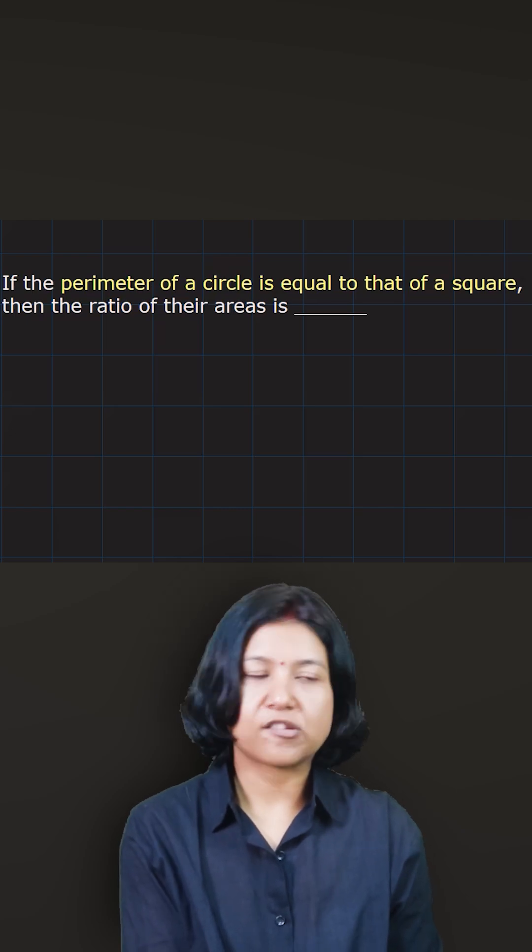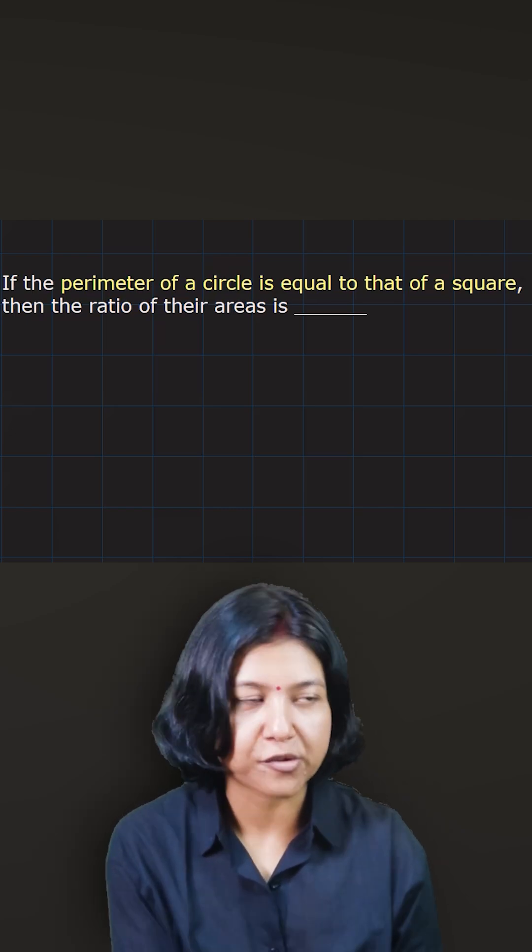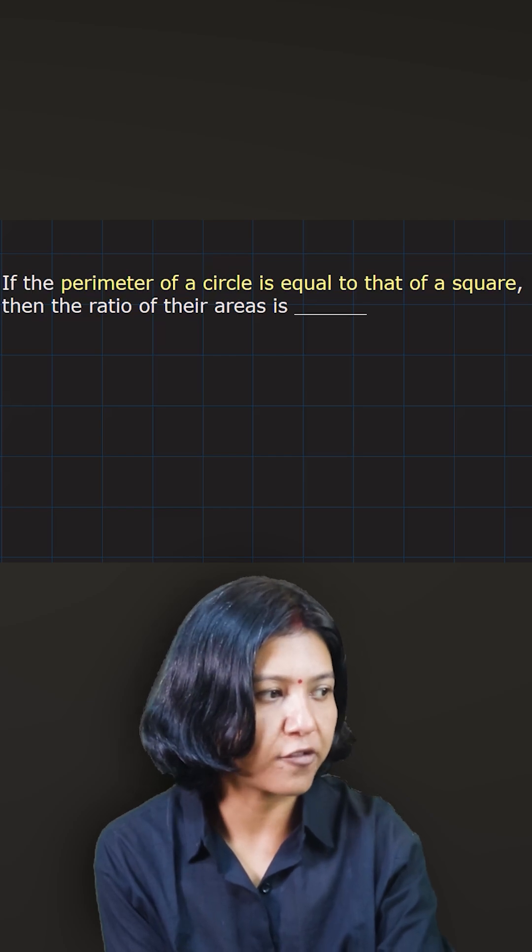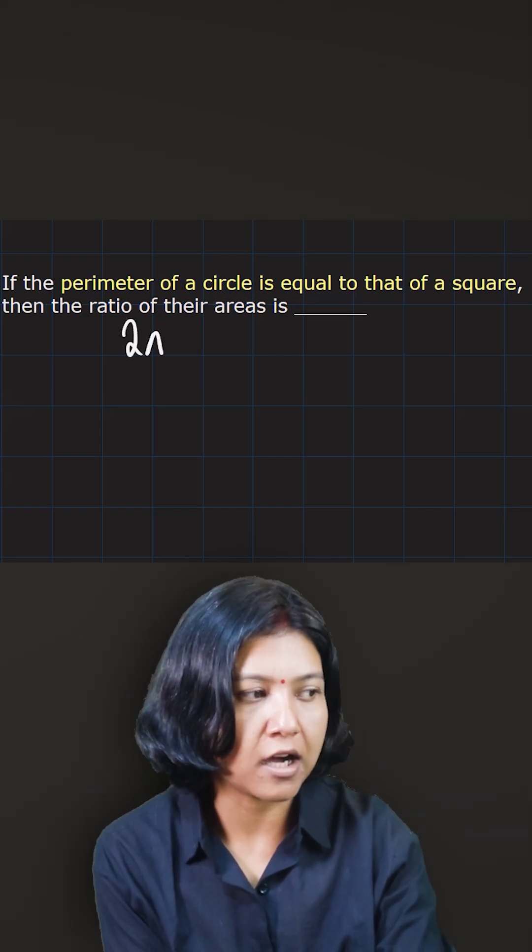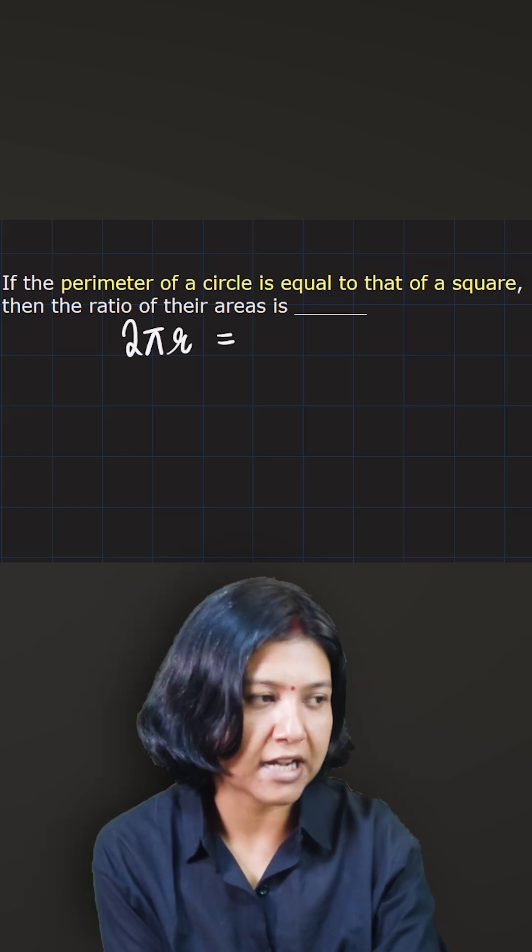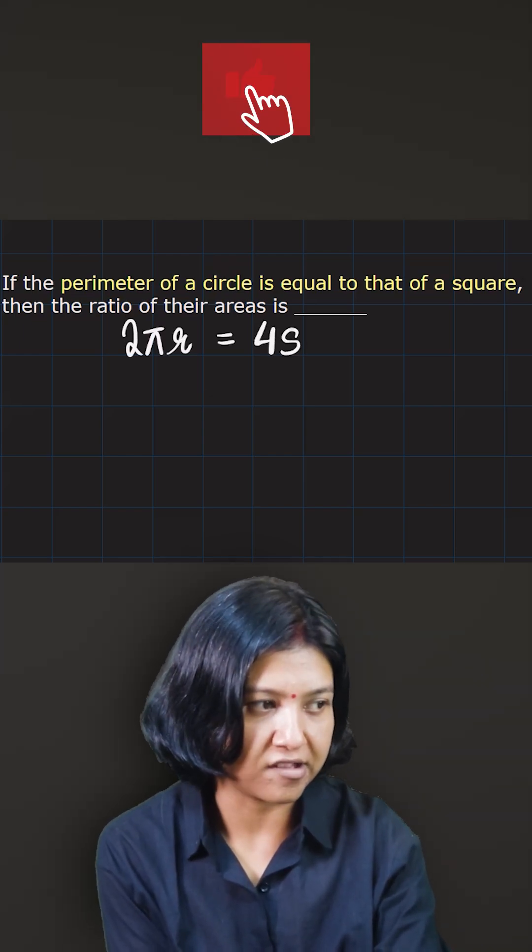What happens when the perimeter of a circle is equal to that of a square? The perimeter of a circle is otherwise known as the circumference. The formula for that is 2πr where r is the radius, and for a square the perimeter is always four times the side. So I'm saying s is the side.